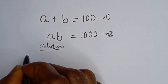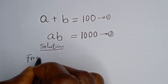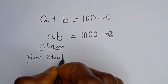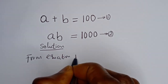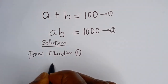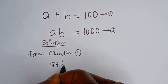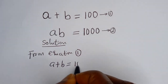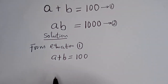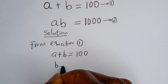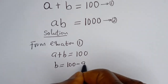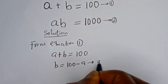From equation 1, we have A plus B is equal to 100. Let's make B the subject of the formula: B is equal to 100 minus A. Let's call this equation 3.